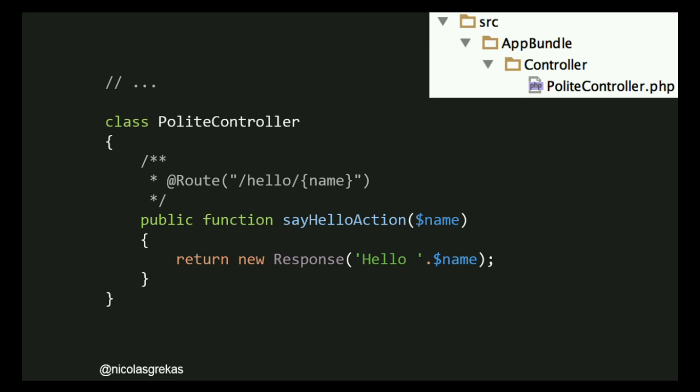Can we do even less work? Back to our route and controller definition — in Symfony you can use annotations to define routes. Instead of creating a routing.yaml file, you can put configuration and code in the same place using the @Route annotation with the path as the first argument. This is really useful because you have everything in one place and you know just by looking at a single file that the say hello action is mapped to the slash hello slash name URL.